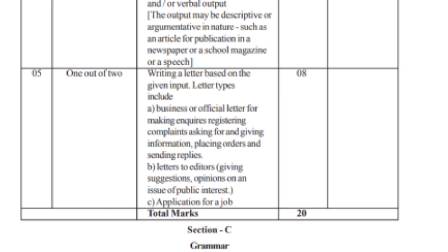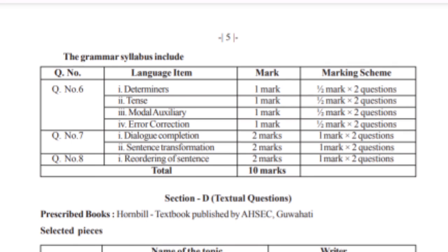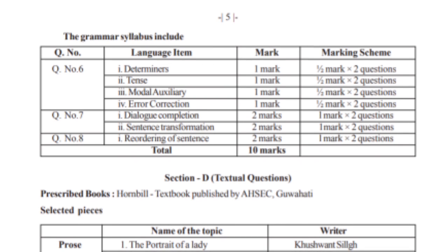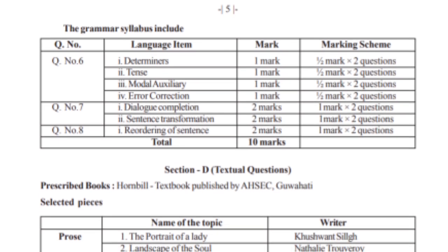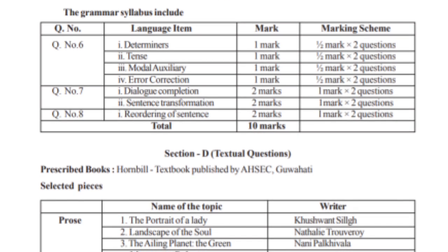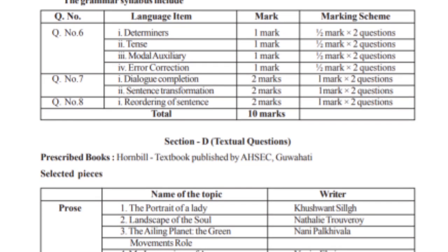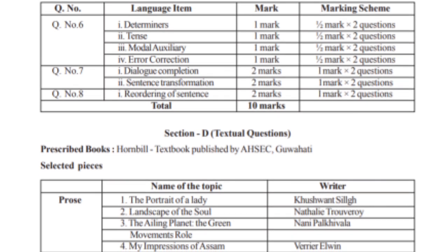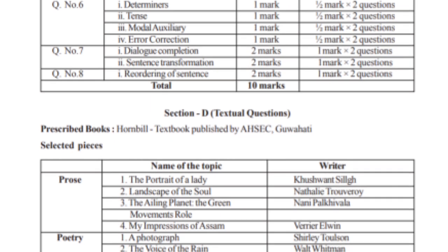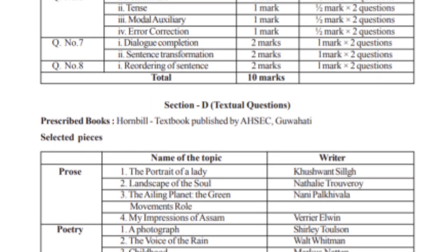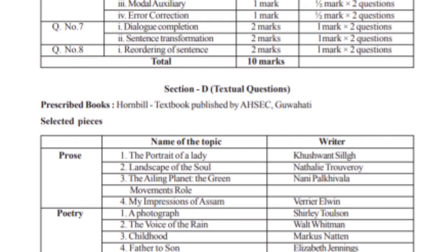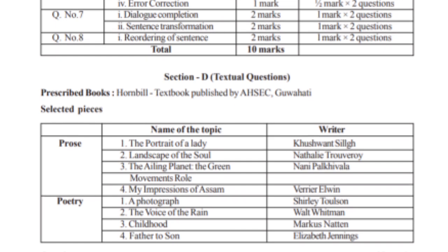Next is the grammar section. Grammar section covers: determiners — 1 mark; tense — half mark; modal auxiliaries — half mark; error correction — half mark; dialogue completion — half mark, which is 2 marks; sentence transformation — 2 marks; and reordering of sentences — 1 mark.